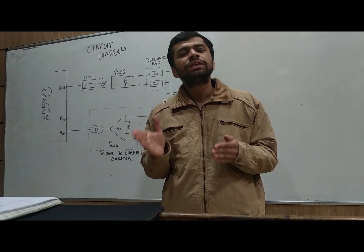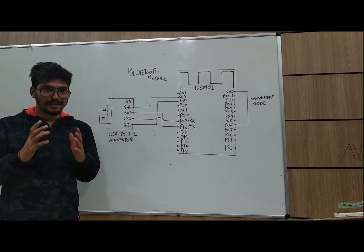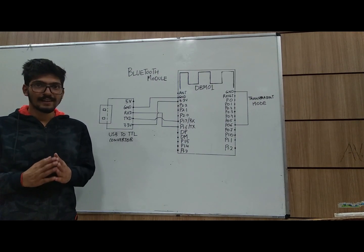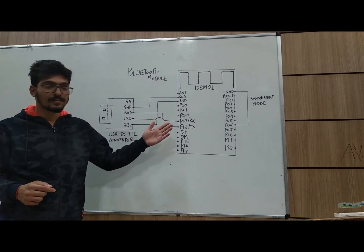These values are further given to Bluetooth module. The impedance values generated from AD5933 will be transmitted over to the Android phone using the Bluetooth module DBM01.